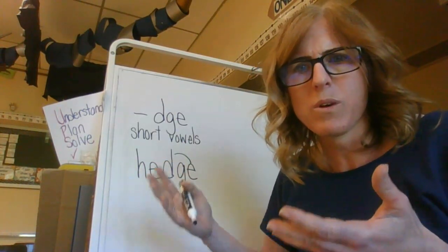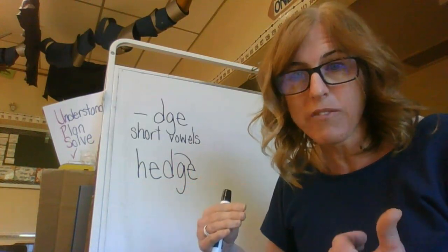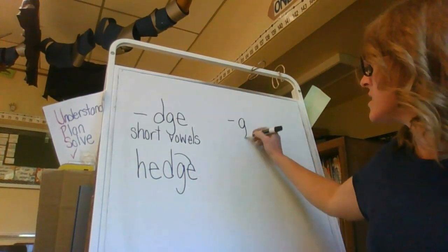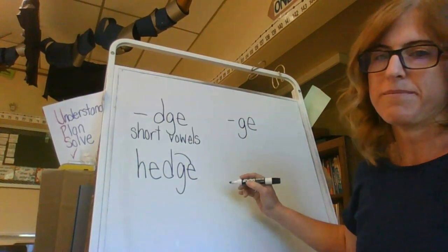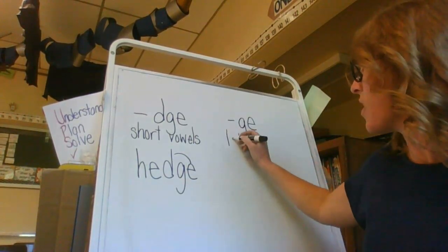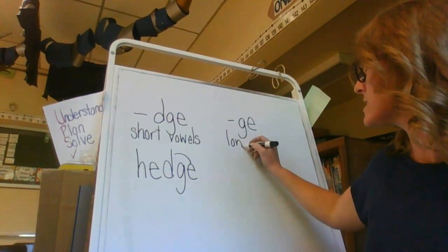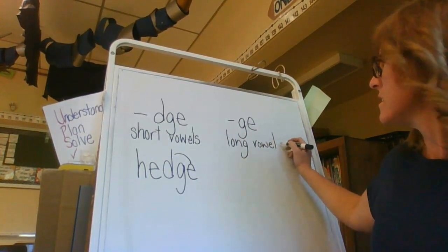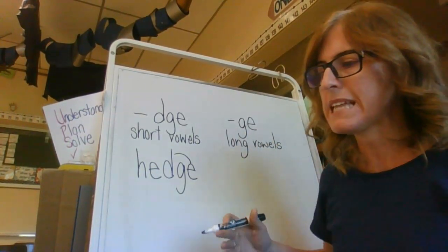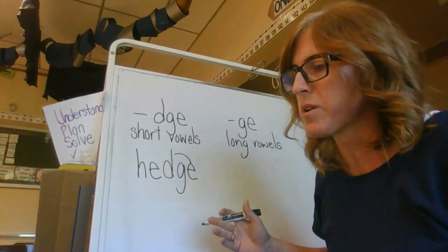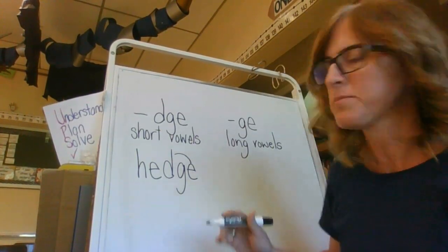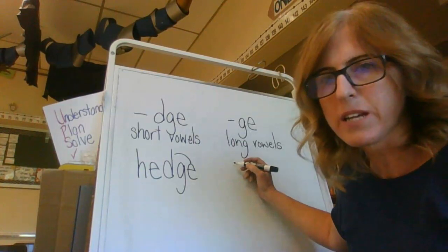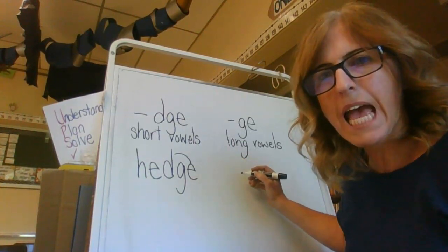So we learned yesterday that when we have a long vowel sound, we use G-E. I'm going to write that this is for the long vowel sound. Let's look at the word 'cage.' K — that could be a C or a K, so let's go to the next letter: A.